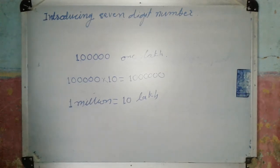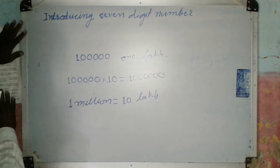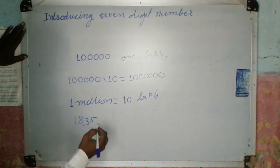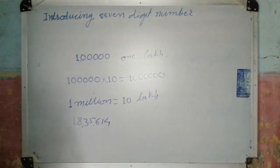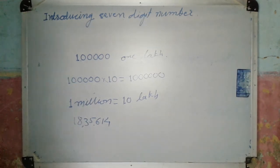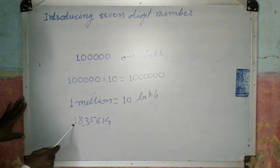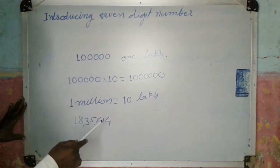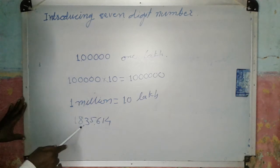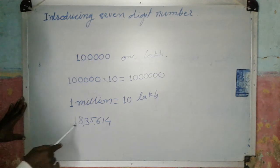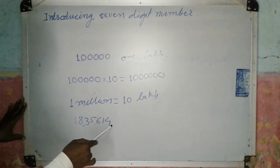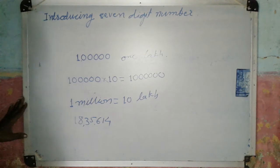This is a 7-digit number. See this number here. How many digits are there? 1, 2, 3, 4, 5, 6, 7 digits. The place values are: units, tens, hundreds, thousands, ten thousands, lakhs, ten lakhs. So this number is 18 lakh 35,640. In this way you can read the number.